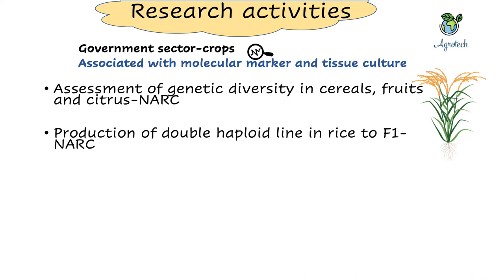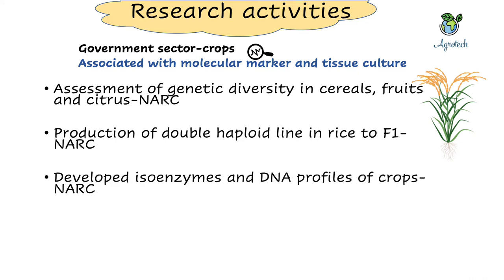Another example is developing isoenzyme and DNA profiles of crops. They have done this for many indigenous crops, some commercial crops, vegetables, and cereals — extracting DNA and developing DNA profiles. This is again helpful for building phylogeny trees, identifying descent parents, and facilitating crossing work. It is closely related to the first example of assessing genetic diversity.